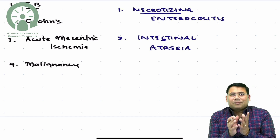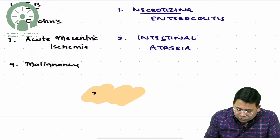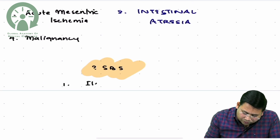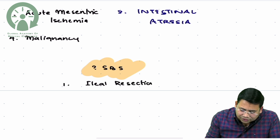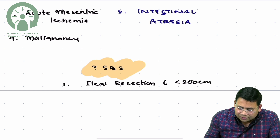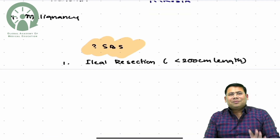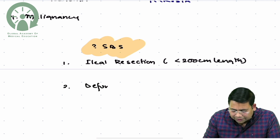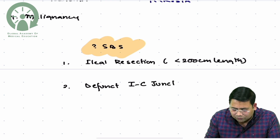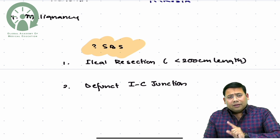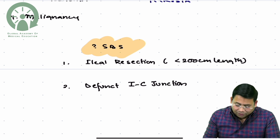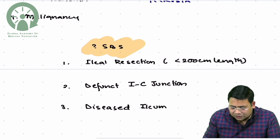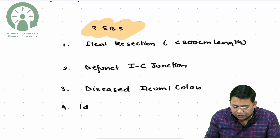The reasons for malabsorption in Short Bowel Syndrome include: first, ileal resection leading to less than 200 cm of bowel; second, a defunct ileocecal (IC) junction — even with normal bowel length, if the IC junction is not working properly, the assimilation process is disrupted; third, diseased ileum or diseased colon; and fourth, idiopathic causes.